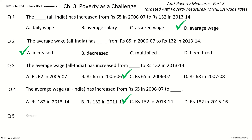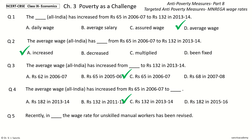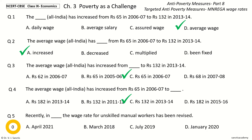Question 5: Recently, in Dash, the wage rate for unskilled manual workers has been revised. The options are: April 2021, March 2018, July 2019, January 2020. The answer is March 2018. The wage rate for unskilled manual workers has been revised in March 2018.